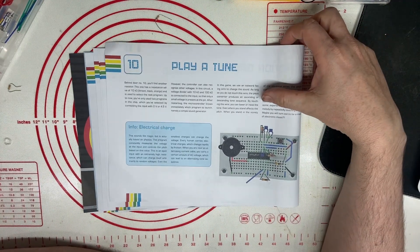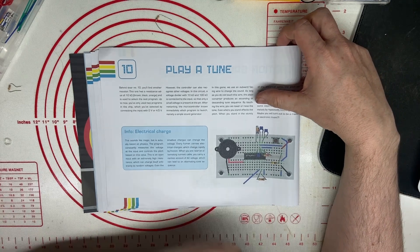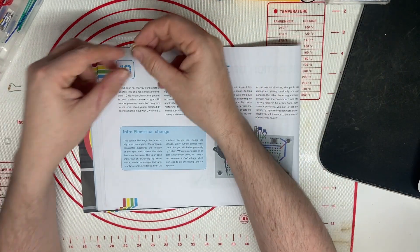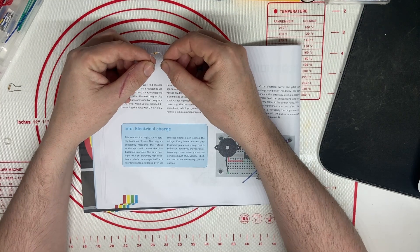Behind door number 10 you'll find another resistor. This one has a resistance value of 10k, brown black orange.